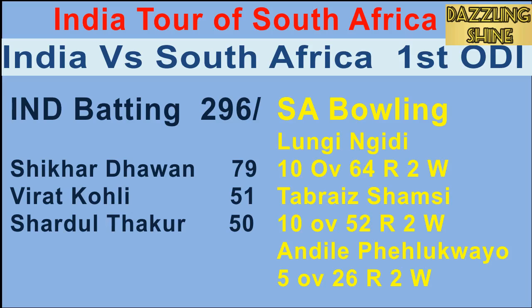Second ball of the 29th over, Shamsi to Kohli — Kohli looks to play, takes the top edge, and it goes to mid-wicket where the fielder takes the catch. Kohli is gone for 51 — a big wicket falls.